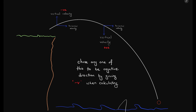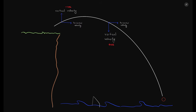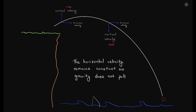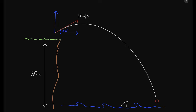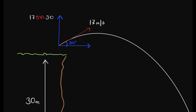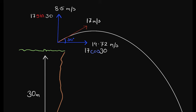I prefer using the positive velocity value for the downward movement of the projectile motion. Throughout the projectile motion, horizontal velocity remains constant as gravity does not pull on the horizontal scale. The question also says that the ball has been thrown at an angle of 30 degrees and the cliff has a height of 30 meters above sea level. Let's break that 17 meters per second into components. The vertical component would be 17 sin 30 and the horizontal component 17 cos 30, as the angle is between the horizontal line and the main line.